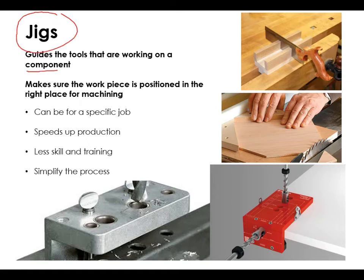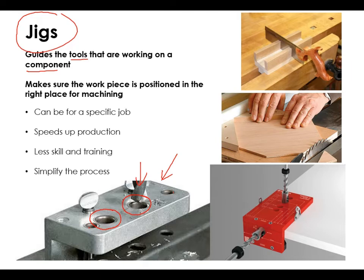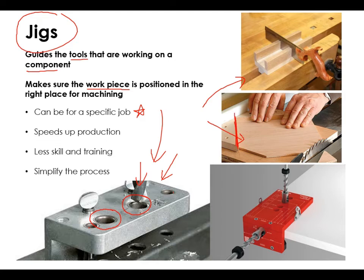Next we're going to talk about is called a jig. These are a little bit different because they are used to guide tools. Here's a good example — it has two holes that have already been pre-drilled, and you can see that the drill bit is actually passing through the hole. You could clamp this onto your piece of material, and what that would mean is that if you keep changing the material, you would drill holes in the same place every single time. It can be for a very specific job — drilling a hole, cutting a particular length, or cutting certain angles.